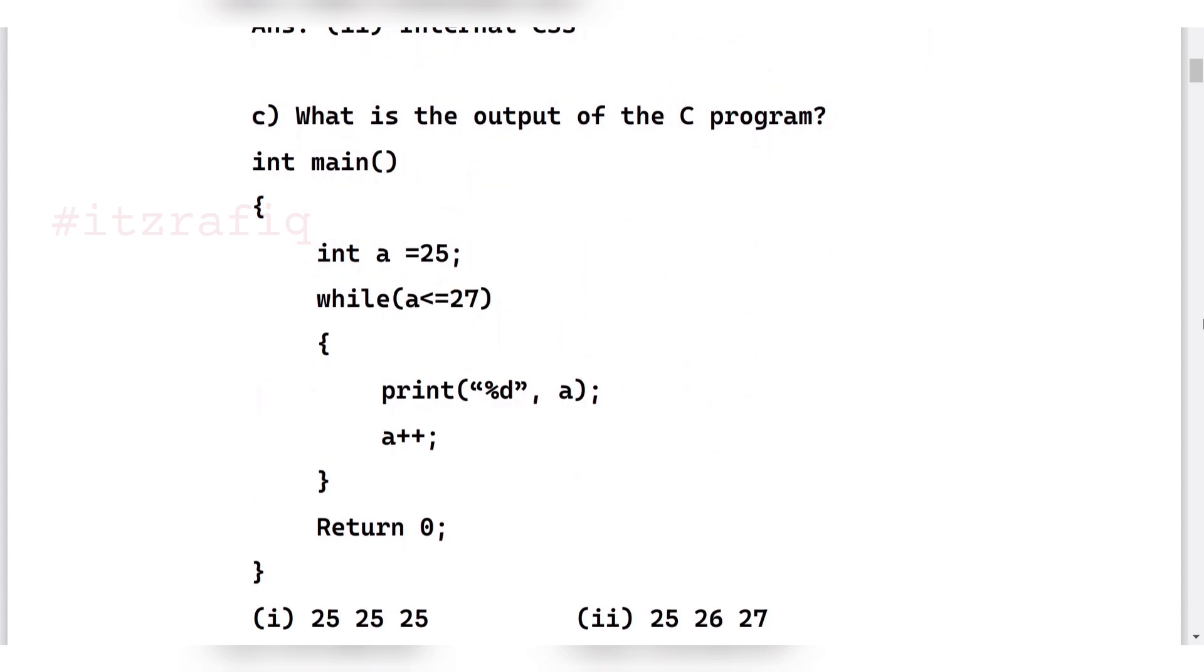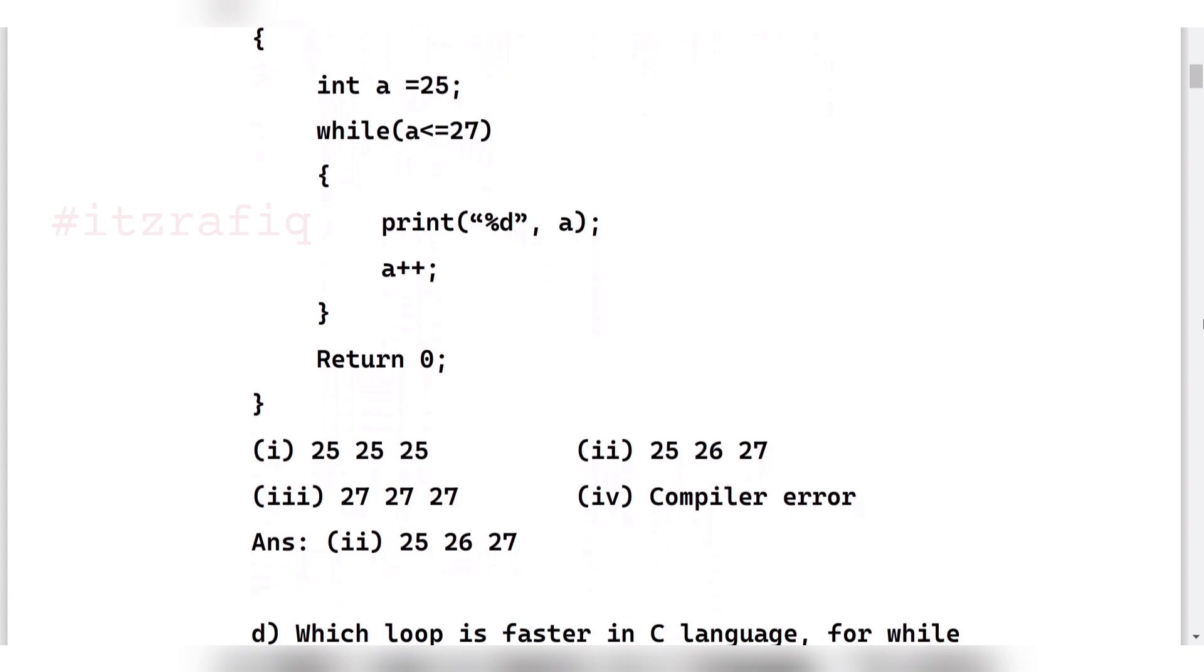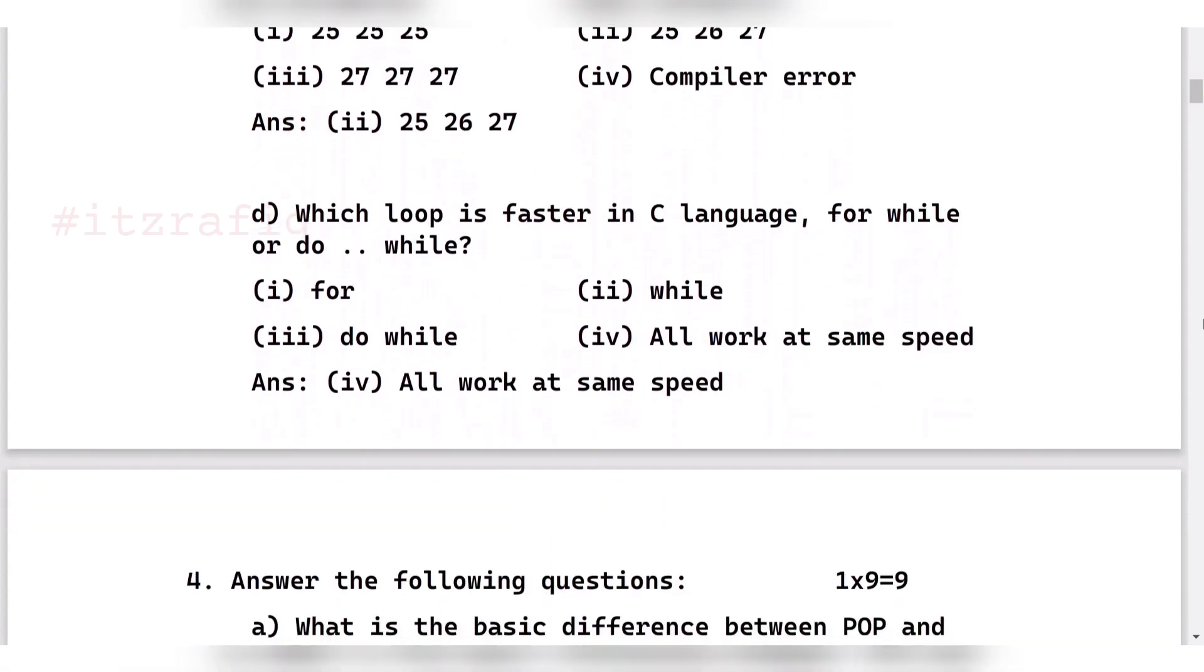What is the output of the C program? Here you see A is starting from 25 and it will go till 27, so the output will be 25, 26, and 27. The correct answer is option 2. Which of the following loop runs fastest in C language? Actually all loops will have the same speed, but depending on our situation or scenario we will decide what type of loop we are going to use.